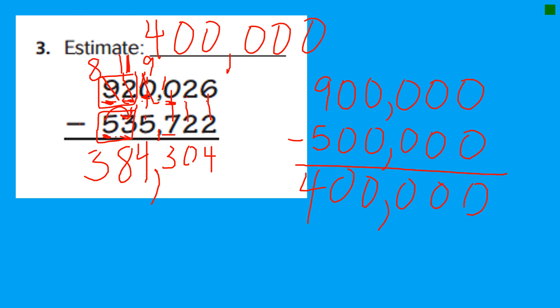Now we're going to check to see if our answers are reasonable. Our estimate was 400,000. Our actual is 384,304. I'd say totally reasonable.